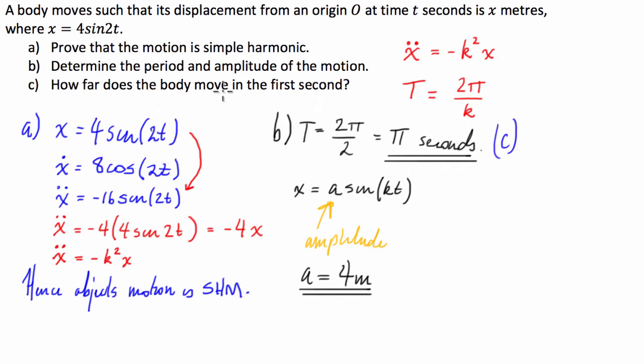How far does the body move in the first second? Okay. So, the first thing we're going to do, guys, is we're going to figure out where the object starts, so its initial displacement. So, we're going to have x when time equals 0. For that, we just substitute 0 into our initial equation. We're going to have x is equal to 4 sine of 2 times 0. Sine of 0 is 0, times 4 is still 0. So, at time equals 0, x is equal to 0.